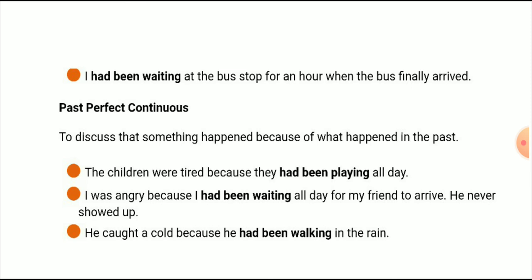Examples of cause and effect using past perfect continuous: Number one — 'The children were tired because they had been playing all day.' Number two — 'I was angry because I had been waiting all day for my friend to arrive. He never showed up.' Number three — 'He caught a cold because he had been walking in the rain.'